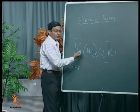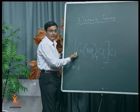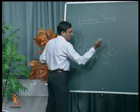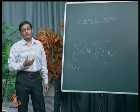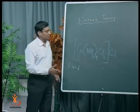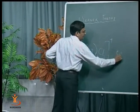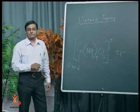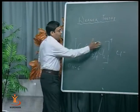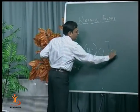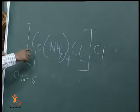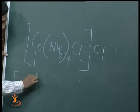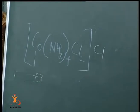One chlorine satisfies the primary valency and two chlorines satisfy the secondary valency. This is ionizable — if this complex compound is reacted with silver nitrate, we get a white precipitate of silver chloride due to ionization, giving Cl⁻. For this neutral complex compound, you can calculate the oxidation state of cobalt, which is +3.